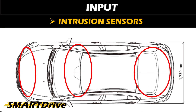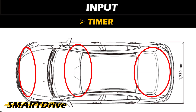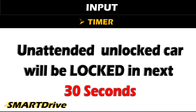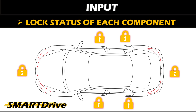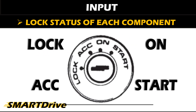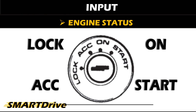In case of theft, these sensors will be activated and will result in a full blast siren. The control unit also uses a timer to make certain decisions, like locking an unattended car. The control unit continuously scans for changes in the lock system. Engine status is also an important input — it will check whether the car is in lock, ACC, on, or start mode.